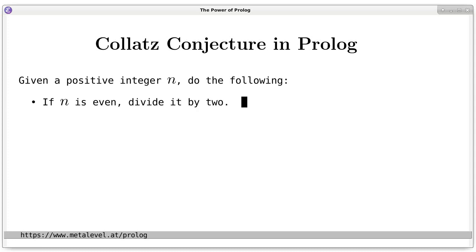If n is even, we divide it by 2. On the other hand, if n is odd, we triple it and add 1.